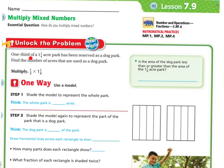Let's unlock the problem. One-third of one and one-fourth acre park has been reserved as a dog park. Find the number of acres that are used as a dog park. So in order to do that we're going to multiply one-third times one and one-fourth. Will the dog park area be less than or greater than one and one-fourth acres? The answer is less than.